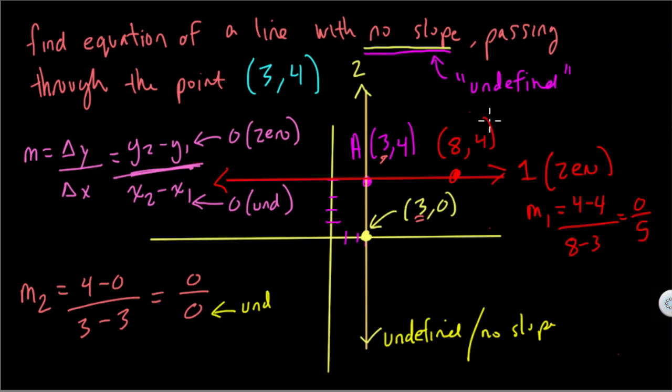So we want to find the equation of this line. We know it has to be a vertical line. And notice the vertical line here goes up and down, but it always stays at the same x value. Here it's (3,0). Up here it's (3,4). Down here it could be (3, something else).